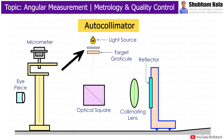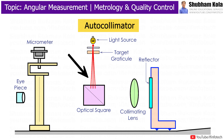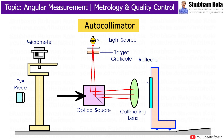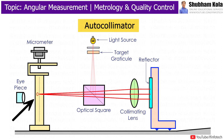During the working, when a beam of light rays comes out of the light source, the light rays are split by the target graticule and incident on the optical square. Through the optical square, the light rays change direction by 90 degrees and go to the reflector via collimating lanes. If the reflector is perpendicular to the optical axis, the light rays are reflected and go in the same path, visible to the eyepiece at point O.